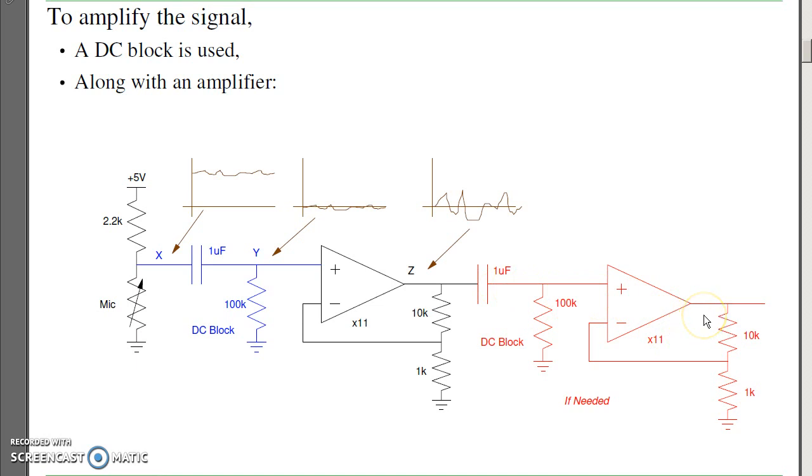So again, block the DC level, block the DC offset, amplify it again. Keep on amplifying, eventually I have a large enough signal. That's fairly common in audio. Block the DC offset, amplify. Block the DC offset, amplify.